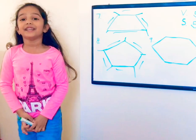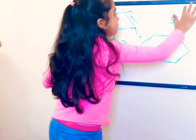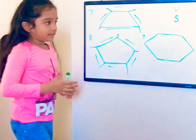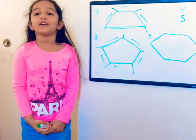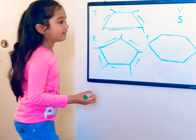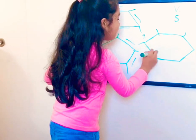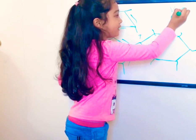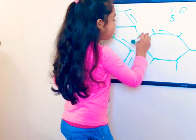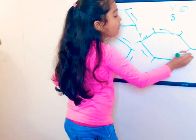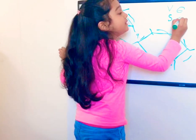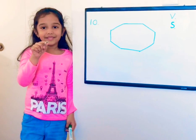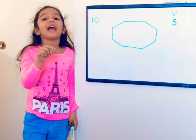Next is hexagon. Let's count the hexagon's vertices and sides. One, two, three, four, five, six — it has six vertices. And one, two, three, four, five, six — it has six sides. This screw looks like a hexagon.